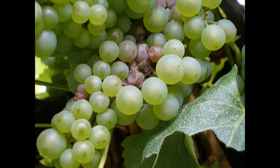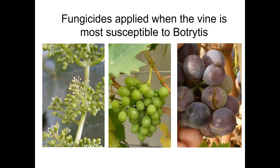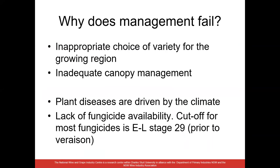We time our management around susceptibility of the plant to Botrytis — at flowering and at post-veraison. A split berry is an ideal infection point for Botrytis. Our real issue is the lack of fungicide availability late in the season, which is one of the reasons why management in the vineyard fails.